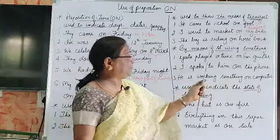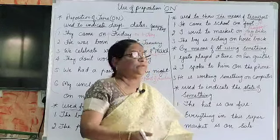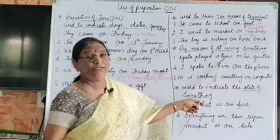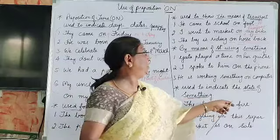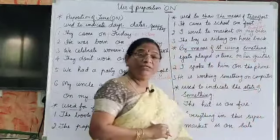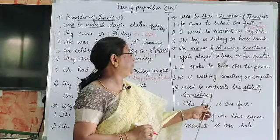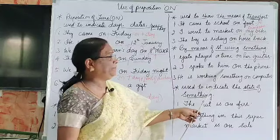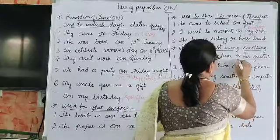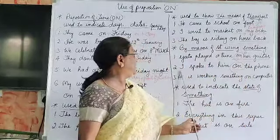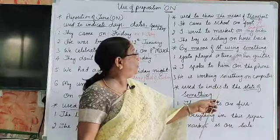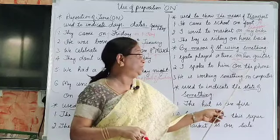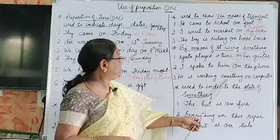Next, 'on' is used to show doing something by means of something. Gita played a tune on her guitar — by using the guitar. I spoke to him on the phone — using the phone. He is working on the computer. This shows using something.